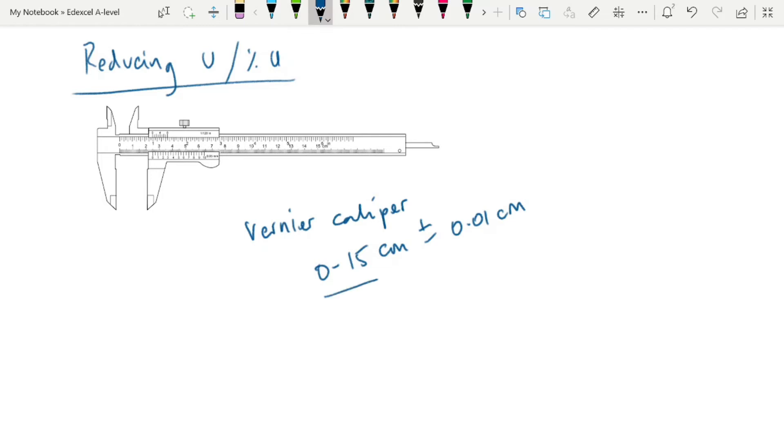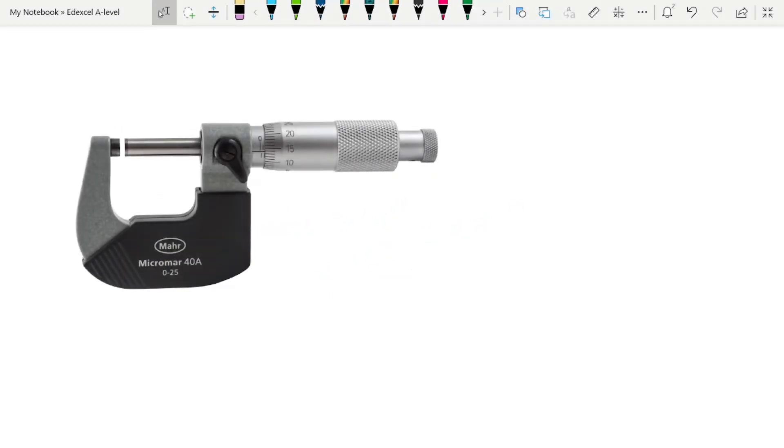Now, of course, you're limited to measuring things with a maximum length of 15 centimeters with a vernier calipers. The second instrument you can use to reduce your uncertainty and percentage uncertainty is the micrometer screw gauge. That's the full name of it.